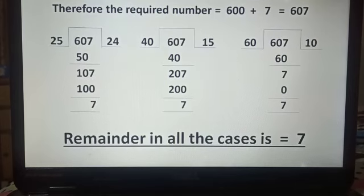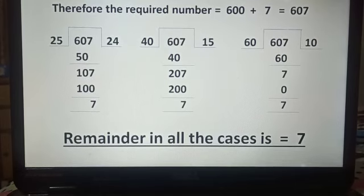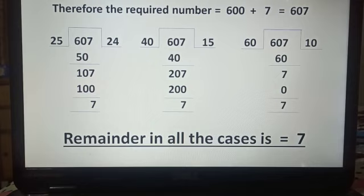Therefore, the required number is equal to 600 plus 7, which is equal to 607.